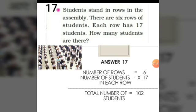17th sum: students stand in rows in assembly. There are 6 rows of students and each row has 17 students. How many students are there? The number of rows is 6 and the number of students in each row is 17. So the total number of students standing in the rows is 17 multiplied by 6, which is equal to 102.